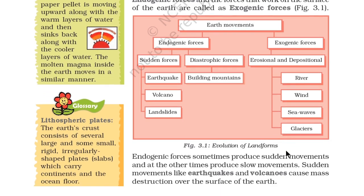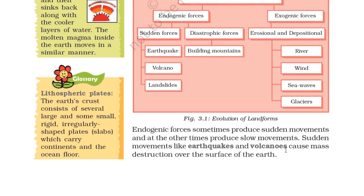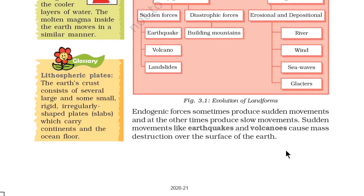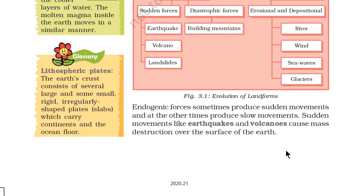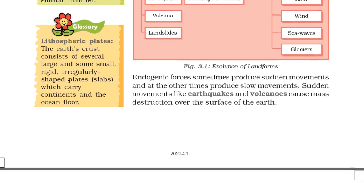Endogenic forces sometimes produce sudden movements and at other times produce slow movements. Sudden movements like earthquakes and volcanoes cause mass destruction over the surface of the earth. The earth's crust consists of several large and small rigid irregularly shaped plates, which are slabs that carry continents and the ocean floor.